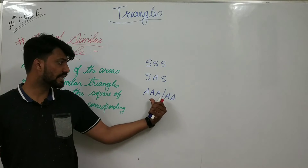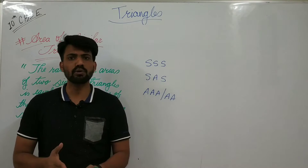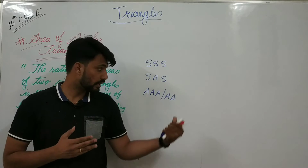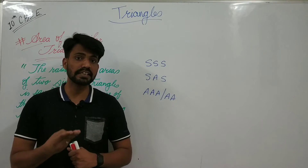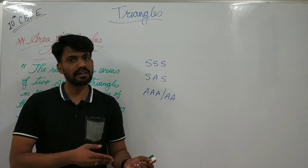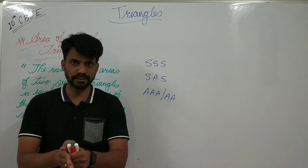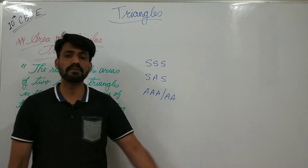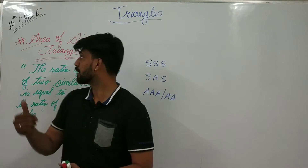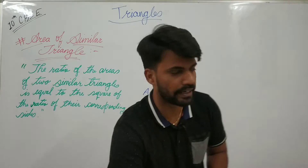The last criteria is AAA or AA: if any two triangles have two angles equal, then obviously the third angle is also equal, and we can say those two triangles are similar. We can use any of these properties for proving the Area of Similar Triangle theorem. Now let's move towards the Area of Similar Triangle proof.